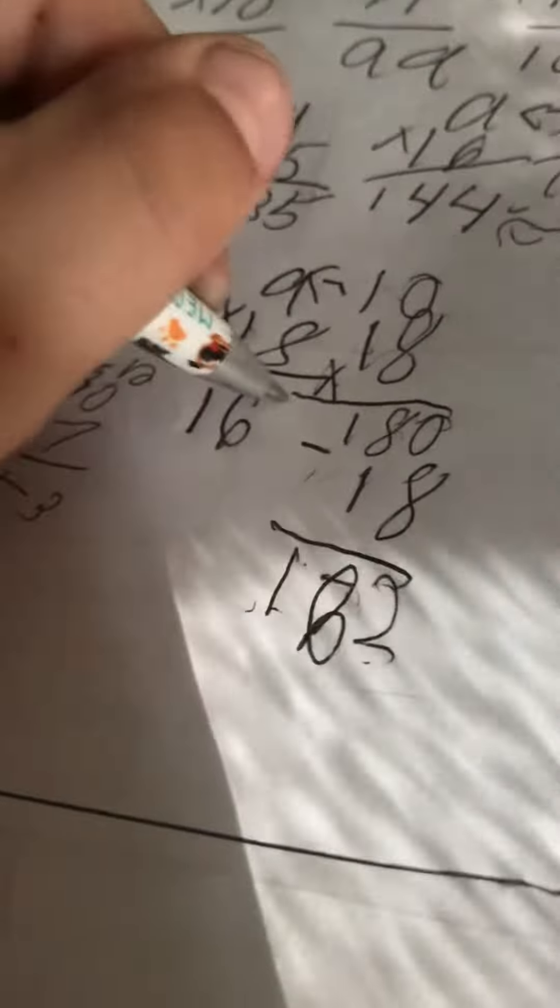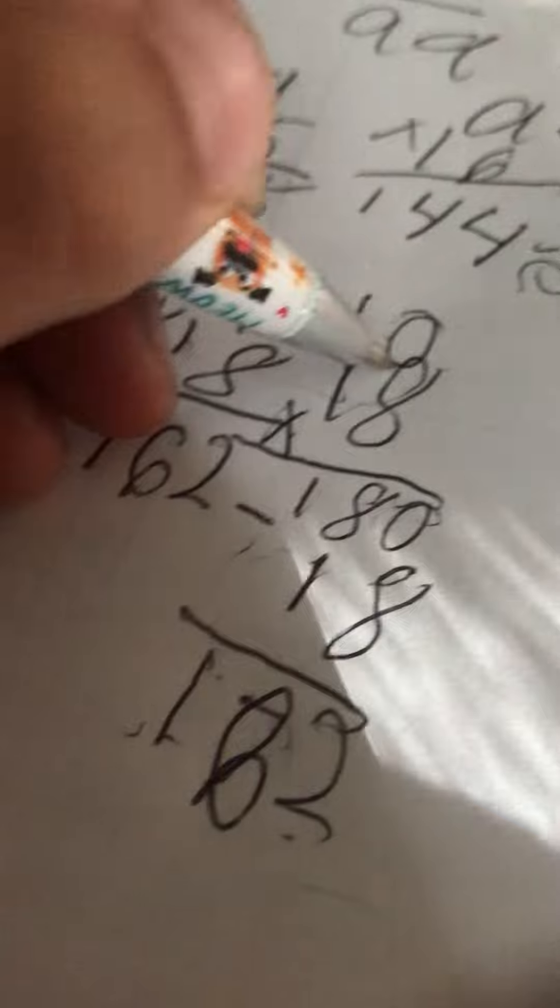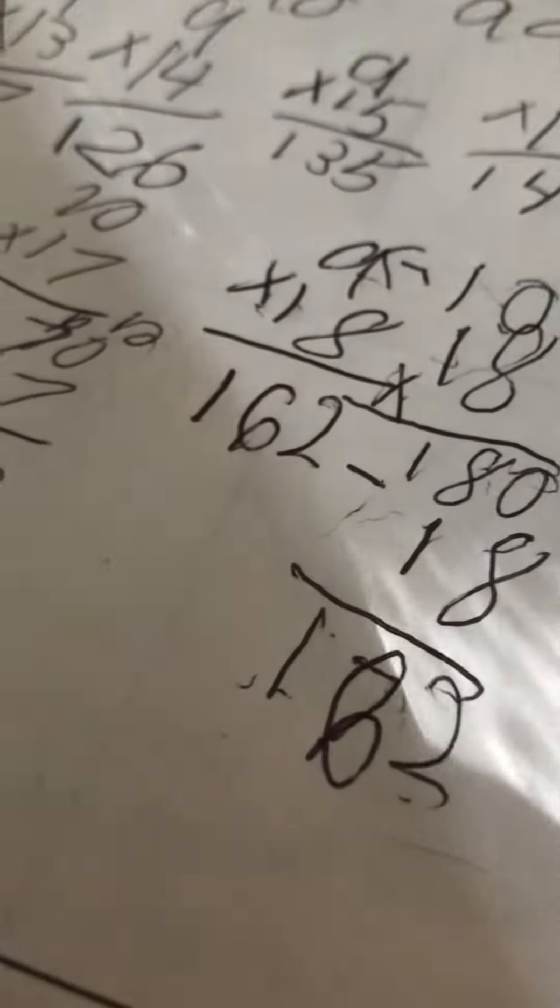The answer to get in the end is 162. So how we did it is we took this nine and made it into ten, so it's a friendly number, it's easy to multiply. And then we took the 18 and just put it right here, then we times it.